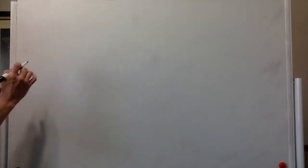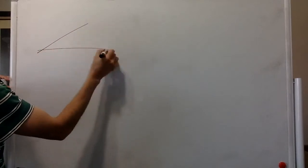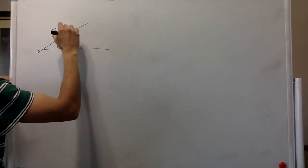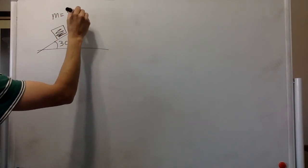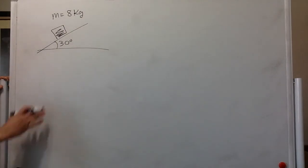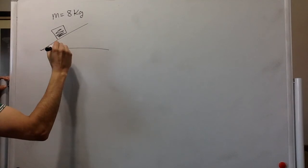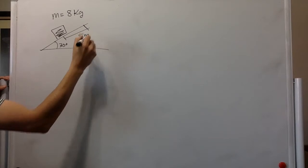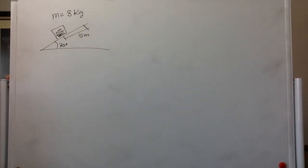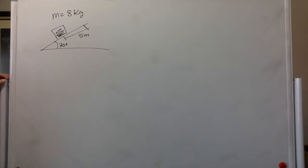Hello. In this problem, we are told that a crate which is 8 kilograms is pulled up 5 meters — so from here to here — up a 30-degree incline by a rope angled 18 degrees above the incline.